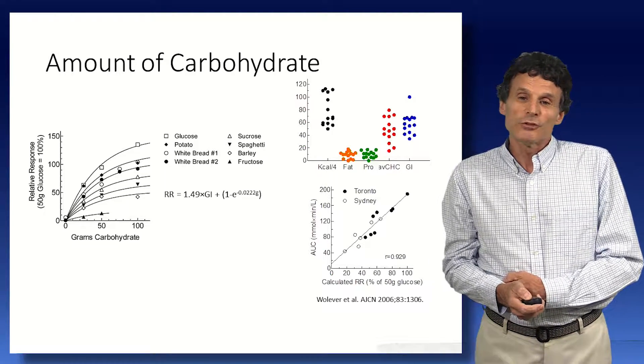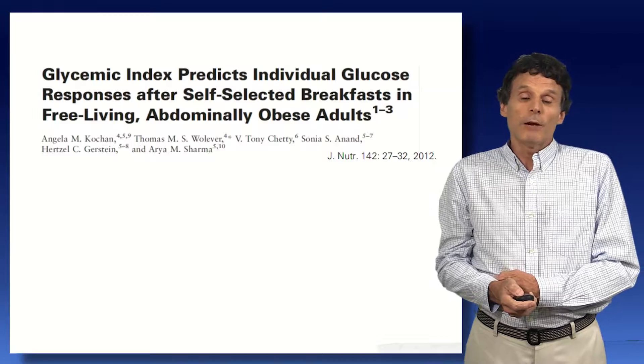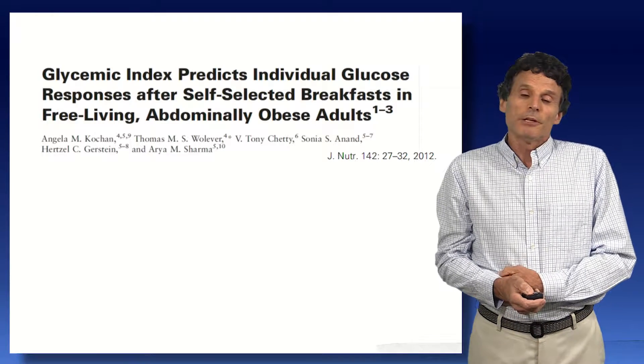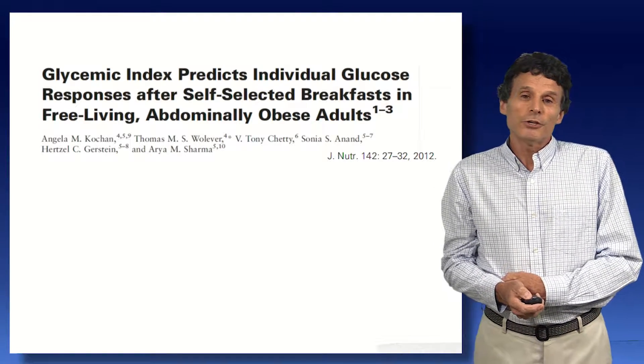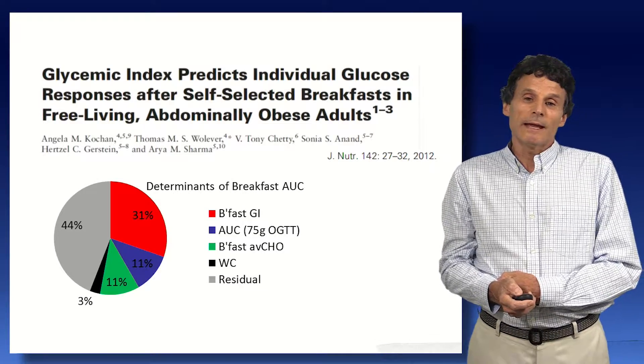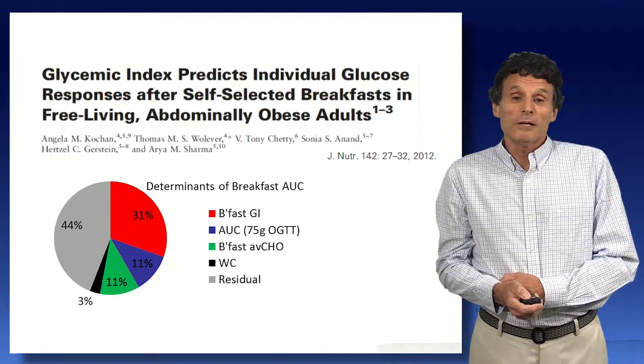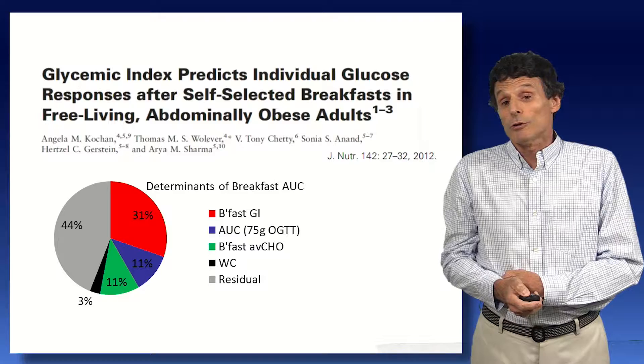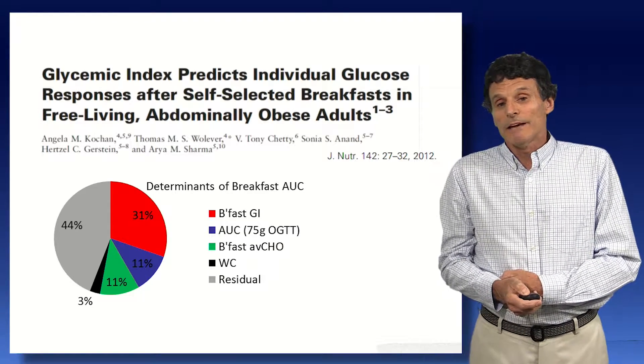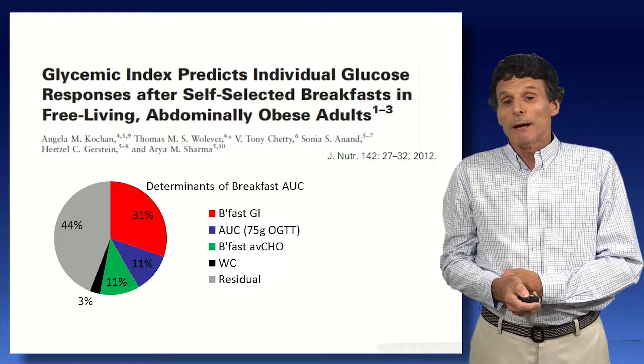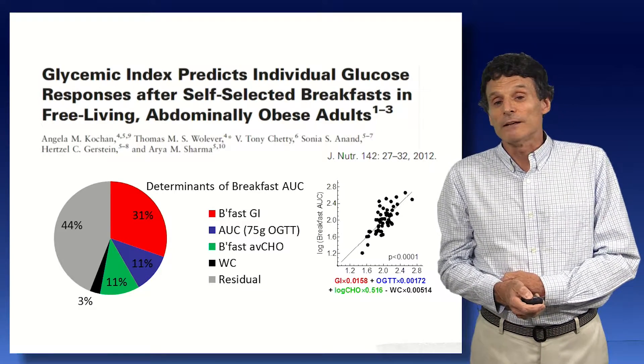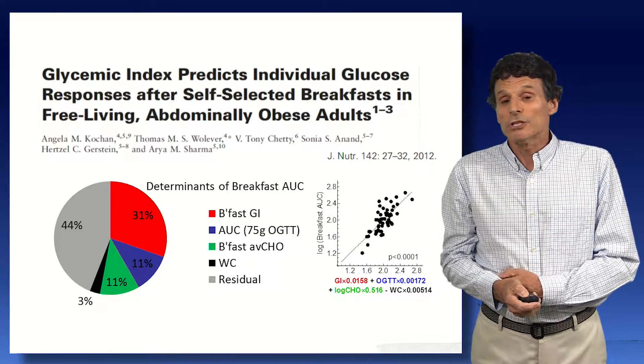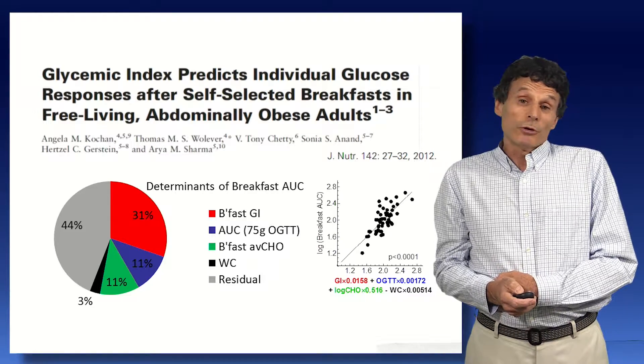But these are sort of artificial meals. So we then went on to say what happens in people eating whatever they want. So this was a study we looked at abdominally obese adults wearing a continuous glucose monitor, eating whatever they want, recording their breakfast intake, in fact, their whole intake. The breakfast response, 30% of that was explained by the GI, about 11% by the oral glucose tolerance test result, another 11% by the amounts of carbohydrate, and a small amount by the waist circumference. So we can explain over 50% of the response by those factors.